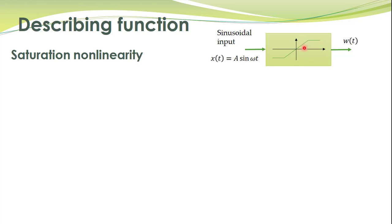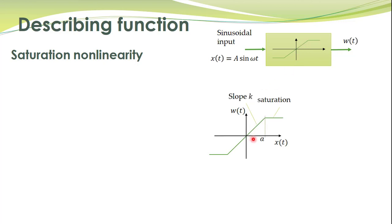A more general situation is that the slope of this line is 1, but it can be taken differently — this slope can have some other value, say a slope of k. So as long as the input to this nonlinearity is smaller than a, the output will be simply proportional to the input. And when the amplitude of the input exceeds this value a, then the output will just saturate. We want to find the describing function for this nonlinearity.